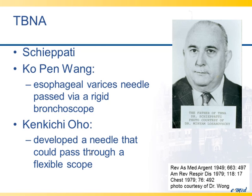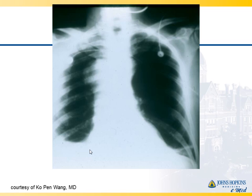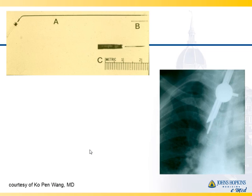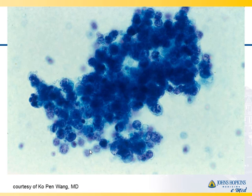TBNA was first performed by Eduardo Chiapade, an Argentinian pulmonologist, and then really came into practice by Dr. Ko-Pen Wang, who I have the pleasure of working with several times a week at Hopkins. He took an esophageal varices needle and passed it through a rigid bronchoscope. Then Kenkichi Oho in Japan developed a needle that would fit through a flexible bronchoscope. Dr. Wang was very kind to lend me some slides. This is the very first TBNA ever performed — you can see a large right upper lobe mass, the needle he used passed through the rigid bronchoscope, and this is the first cytologic specimen from TBNA ever. It's always good to go back in history and see how we developed these things, but also see that this is what we're still getting now — in the past 30-plus years, nothing changes.